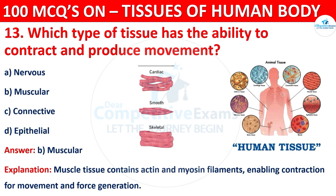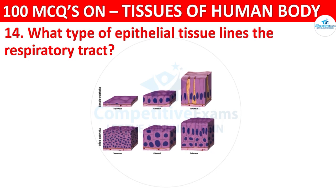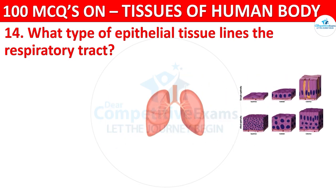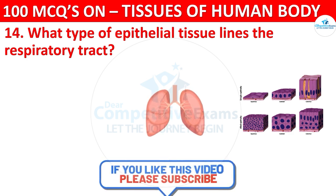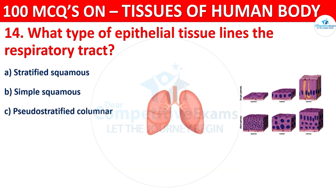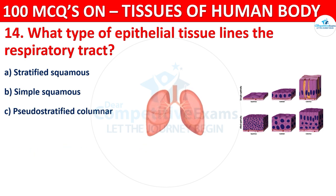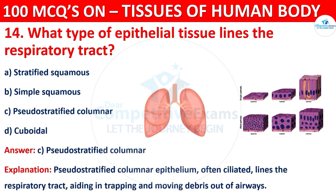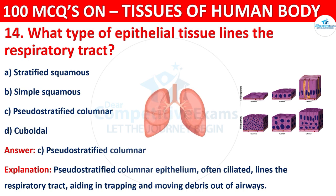Question number fourteen: what type of epithelial tissue lines the respiratory tract? Options are stratified squamous, simple squamous, pseudostratified columnar, or cuboidal. The correct answer is pseudostratified columnar. Columnar epithelium, often ciliated, lines the respiratory tract, aiding in trapping and moving debris out of airways.